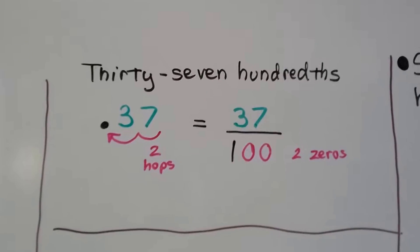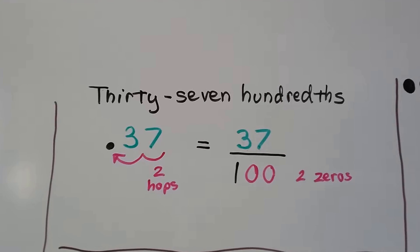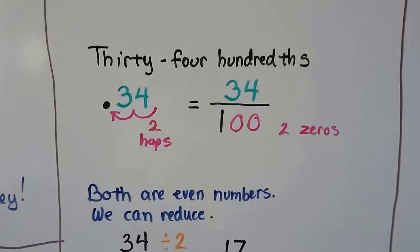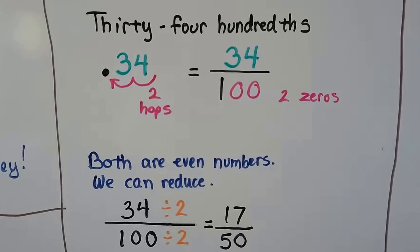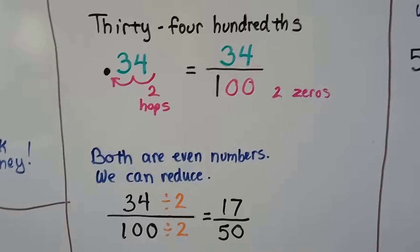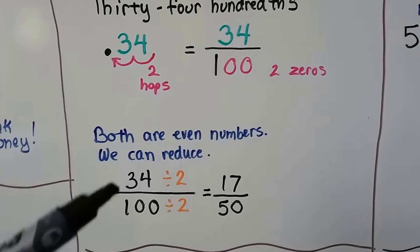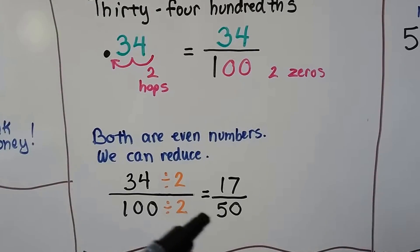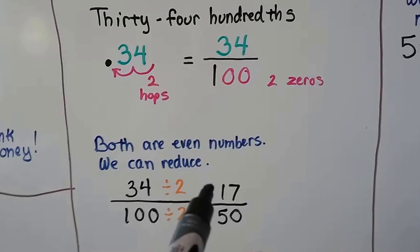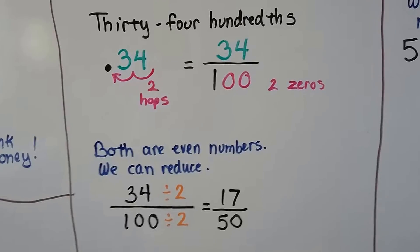Here we have 0.37 — 37 hundredths. There are two hops to the decimal place, so there are two zeros in the denominator. 37 one-hundredths doesn't reduce further. Here we have 0.34 — 34 hundredths. Since both are even numbers we can divide by two: 34 divided by 2 is 17, and 100 divided by 2 is 50. This is as far as it can go because 17 is a prime number — the only way to get 17 is 17 times 1.